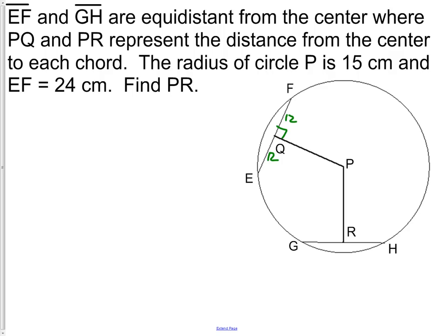But now this piece that it says that EF and GH are equidistant from the center means that PQ and PR are congruent. Lastly, it tells us that the radius is 15, which means I can draw a segment from the center of the circle to point F, and that's 15.